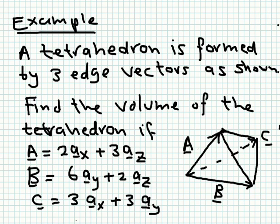As an example of the triple scalar product, we'll look at this tetrahedron example. A tetrahedron is used very often in computational electromagnetics, especially in the finite element method, where space is divided into small shapes — triangles in 2D, and tiny pyramid-shaped tetrahedra in 3D. The tetrahedron here is formed by three edge vectors a, b, and c, with the origin at zero.